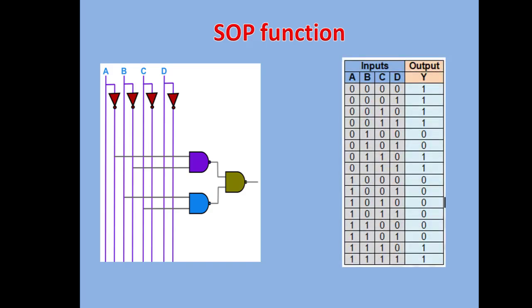This is the given circuit diagram and this is the truth table. We will verify this truth table by applying inputs from all zeros to all ones. We must get the expected output. We'll implement this using Simulide.